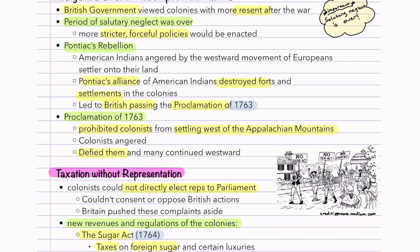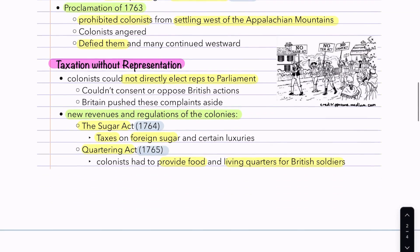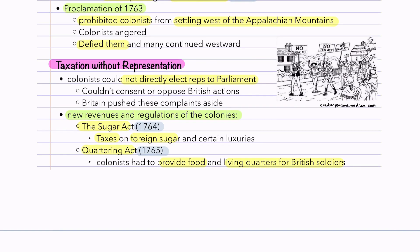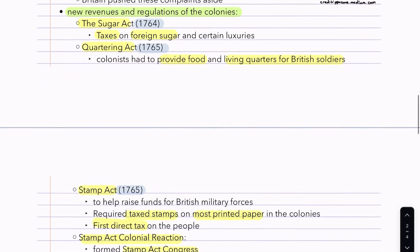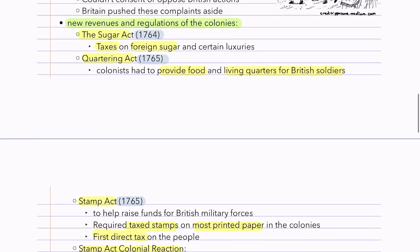The next major concept is taxation without representation. Colonists could not directly elect representatives to Parliament. Britain claimed they had virtual representation — meaning people in Parliament represented every social class but not necessarily every geographical location — which the colonists did not agree with. New revenues and regulations were enforced by Parliament, such as the Sugar Act of 1764, which taxed foreign sugar and certain luxuries; the Quartering Act, which required colonists to provide food and living quarters for British soldiers; and the Stamp Act of 1765, which required tax stamps on most printed paper — newspapers, legal documents, birth and death certificates.